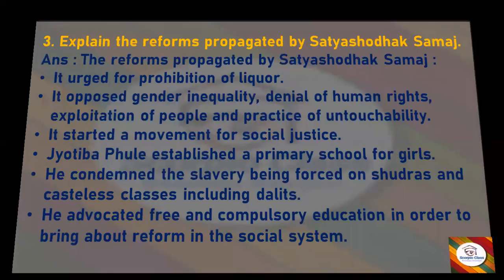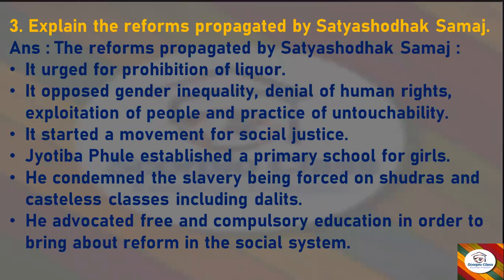Next — explain the reforms propagated by Satya Shodha Samaj. Answer: The Satya Shodha Samaj urged for prohibition of liquor, opposed gender inequality, denial of human rights, exploitation of people, and the practice of untouchability. It started a movement for social justice. Jyotiba Phule established a primary school for girls and condemned the slavery being forced on shudra and dalit castes.